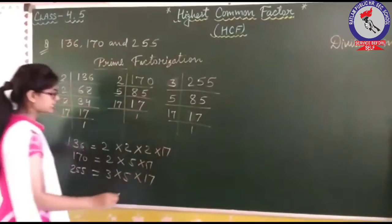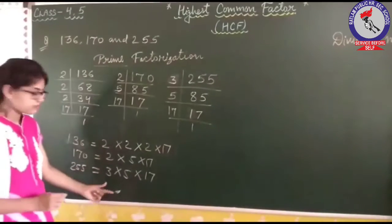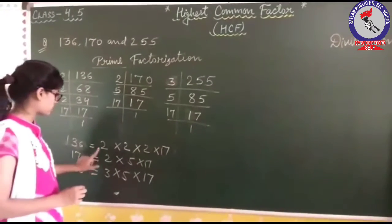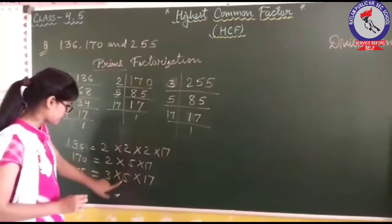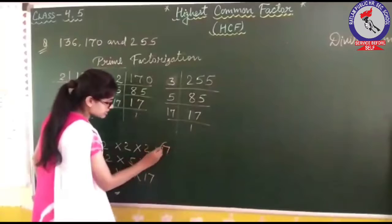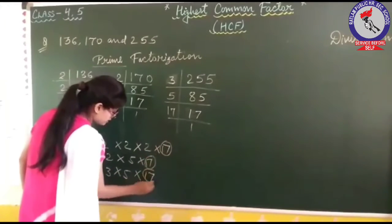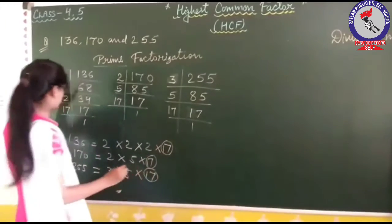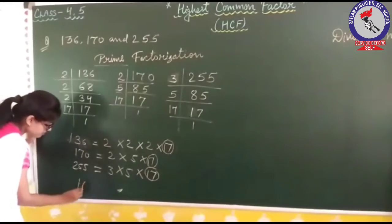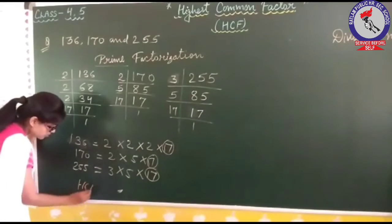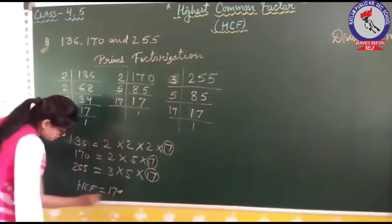Now we can see which common prime factors exist among all three numbers. Only 17 is the common prime factor in all three numbers. So our HCF is 17.